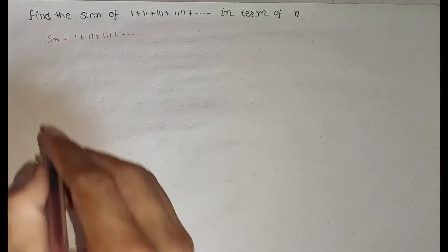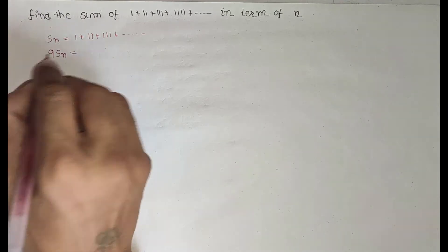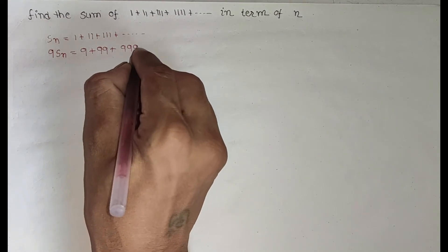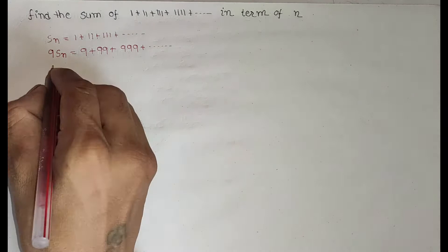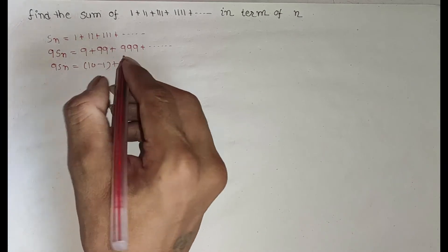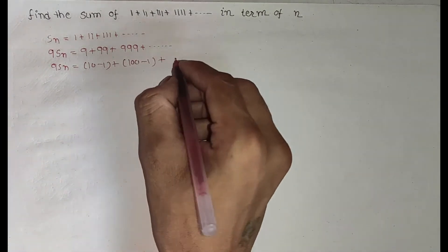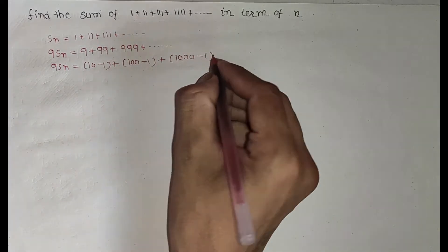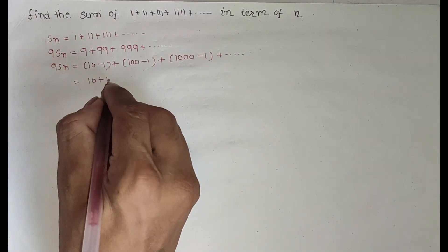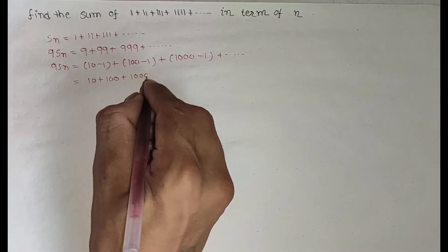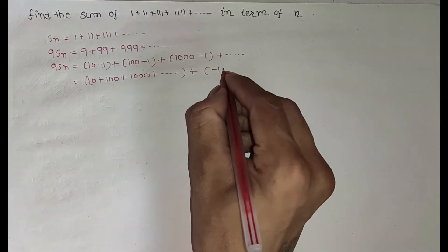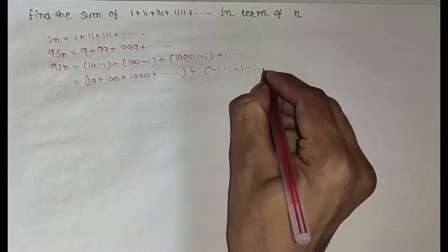I multiply by 9 on both sides, so I get 9 times Sn equal to 9 plus 99 plus 999 plus so on. Now, 9 times Sn equals: 9 is 10 minus 1, plus 99 is 100 minus 1, plus 999 is 1000 minus 1, plus so on.